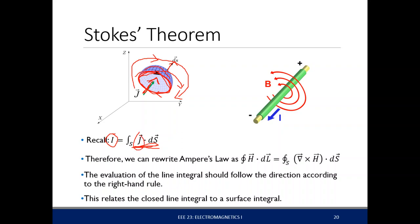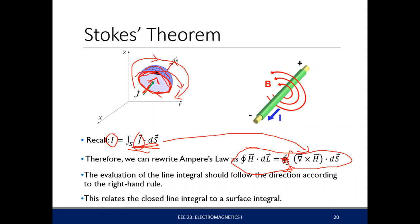Since the current density J is equal to the curl of H, or del cross H, we can rewrite this as the surface integral of del cross H dotted to dS. This whole expression is Stokes' theorem. The evaluation of the line integral should follow the direction according to the right-hand rule.